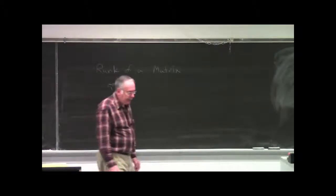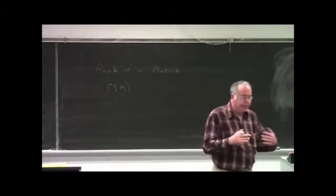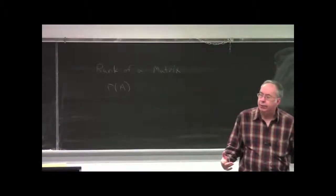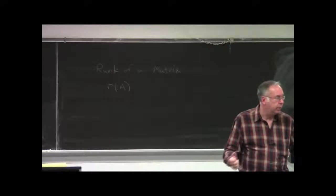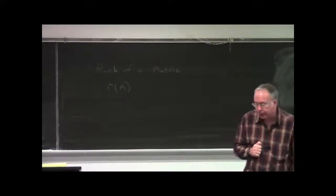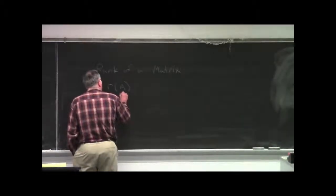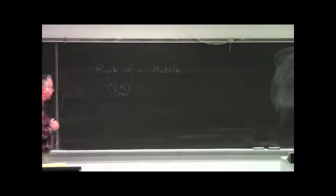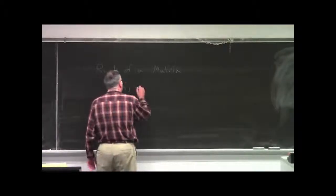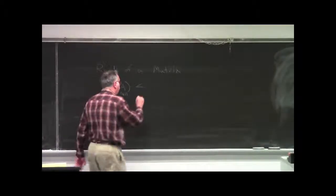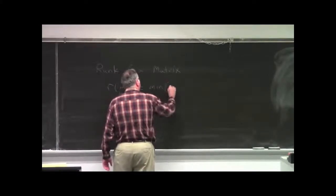The rank of matrix A is the maximum number of linearly independent rows in matrix A. If A is an m by n matrix, then the rank of A must be less than or equal to m or n, whichever is smaller. The rank of matrix A is less than or equal to the minimum value of m or n.